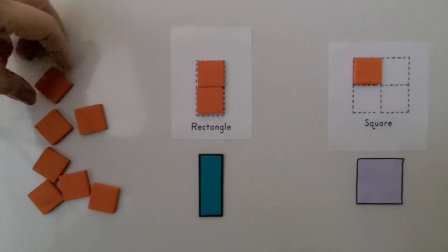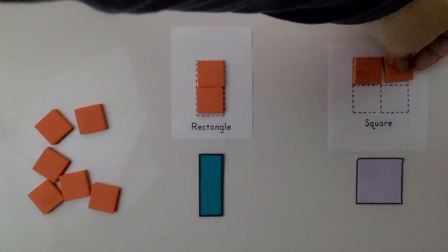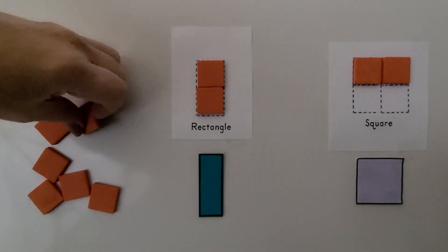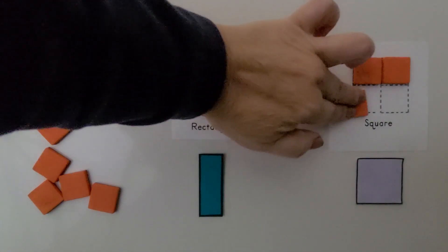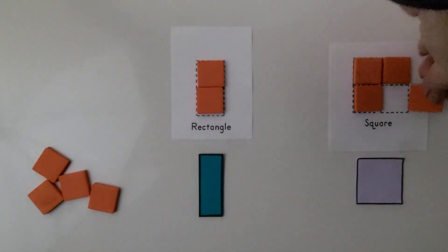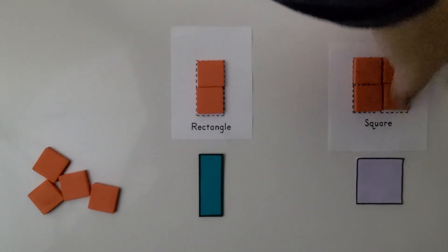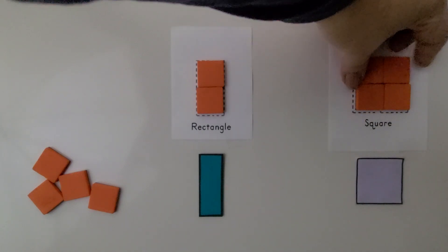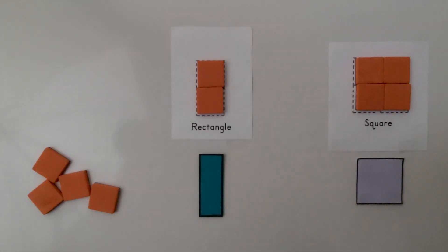And we can use four squares to make a larger square. One, two, three, four. We'll put four squares together, and we make a larger square.